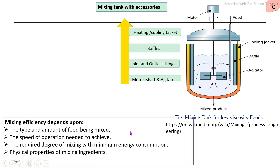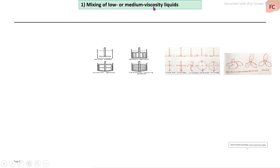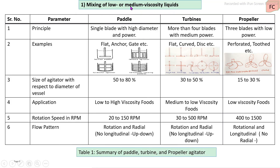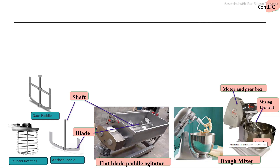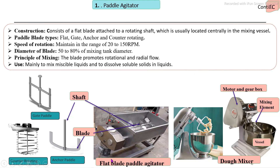The efficiency of mixing depends on the initial raw material properties, the amount of substances, the degree of mixing required, and the amount of energy applied. In the first group — mixing of low or medium viscosity liquids — the main mixing elements are the paddle, turbine, and propeller agitators. The paddle type mixing element is connected to the shaft and located at the center of the mixing vessel.